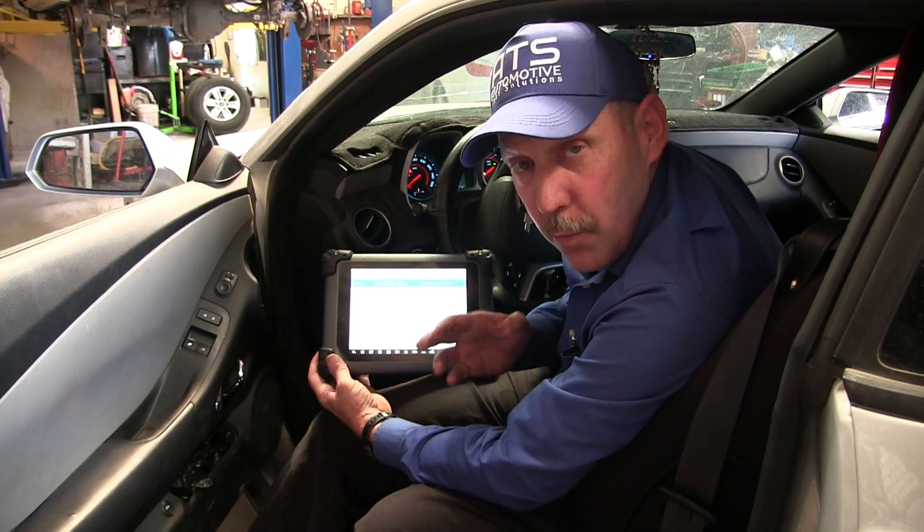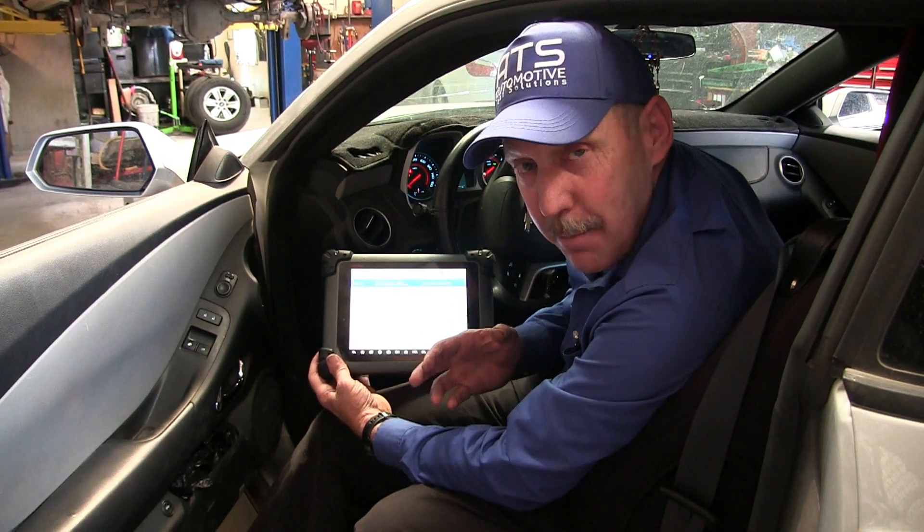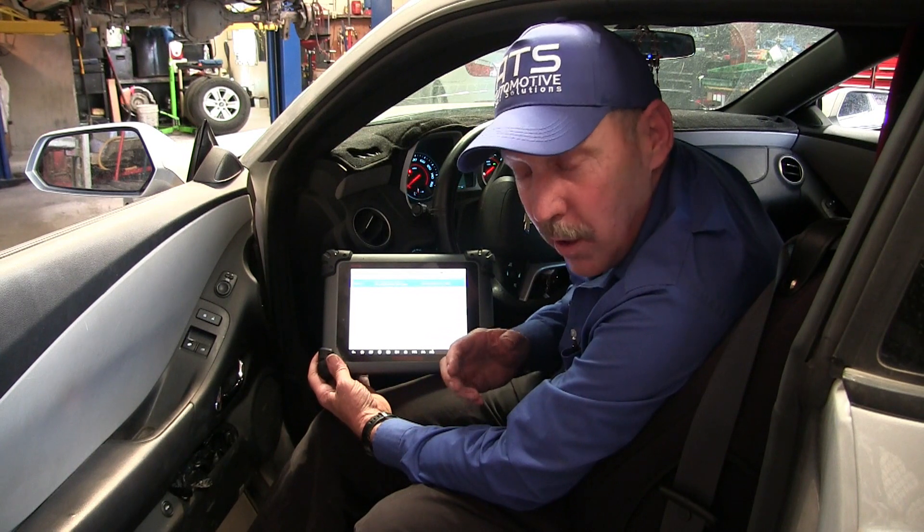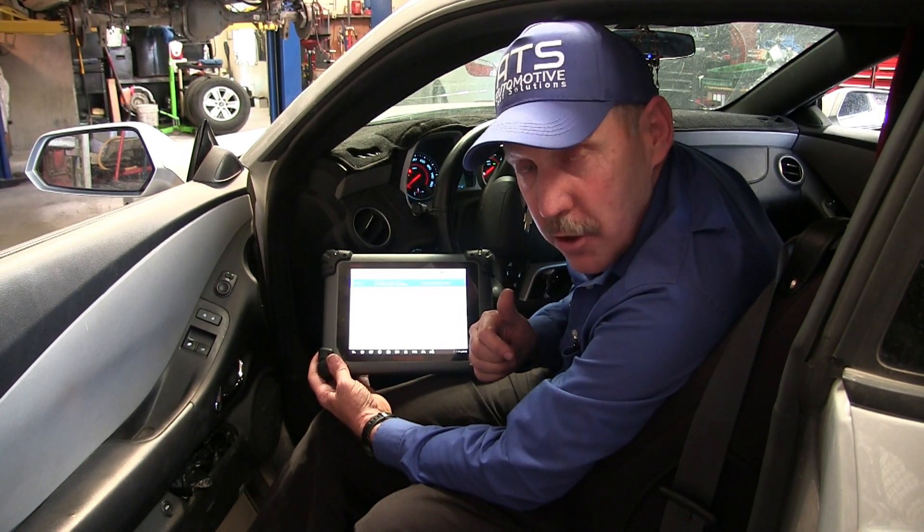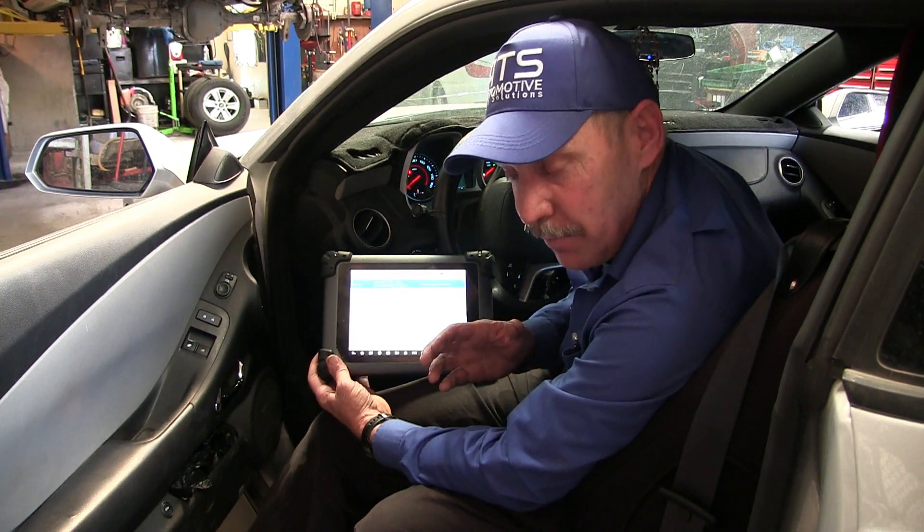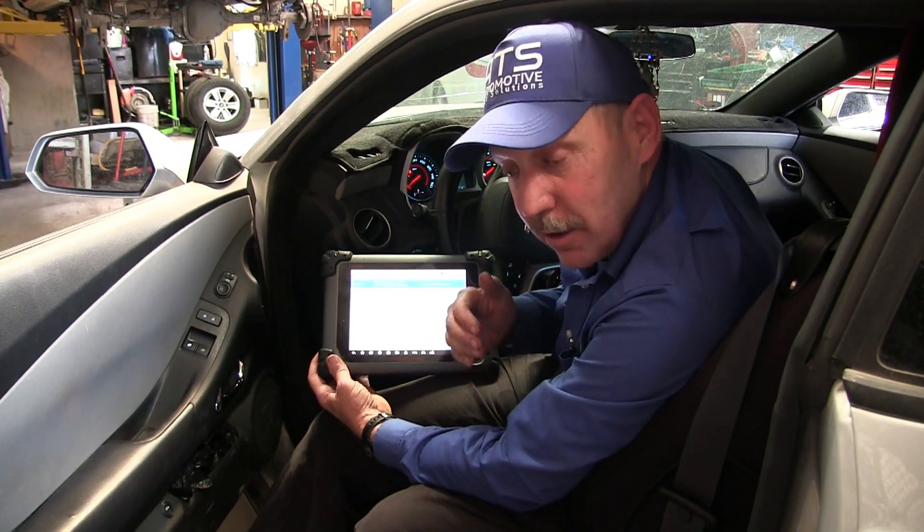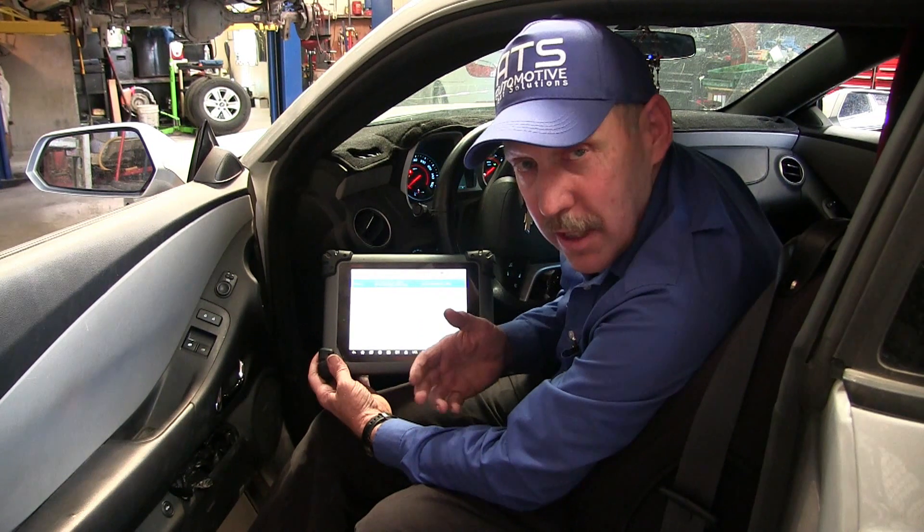Now on these systems, the radio sends out an enable to the control head. When it sees the key go in, it will wake up the control head with an enable signal. Now if the enable signal does not come up, you'll set CAN codes.